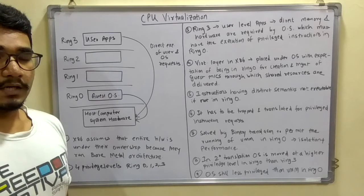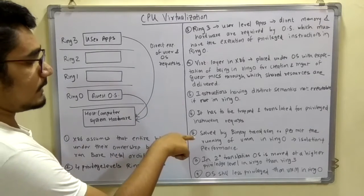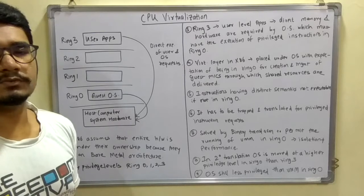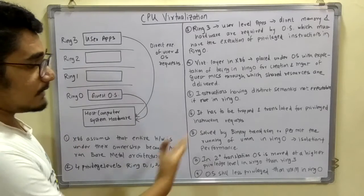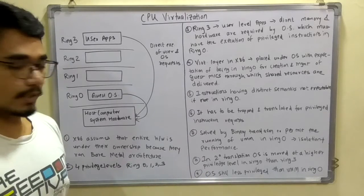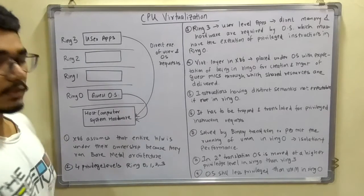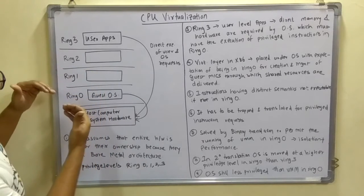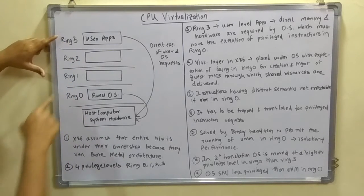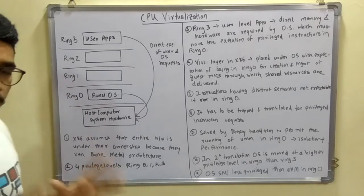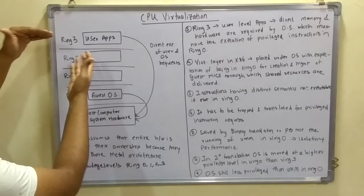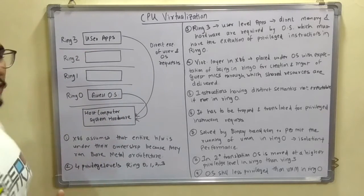The trapping and translating is done by the OS. When using VMware, binary translation of OS requests is used. The problem of executing privileged instructions outside Ring 0 is solved by binary translation of OS requests, which permits running the VMM in Ring 0, providing both isolation and performance improvements. In binary translation, the OS is moved to a higher privilege level, with Ring 0 being the most powerful privilege level, so all executions happen there.